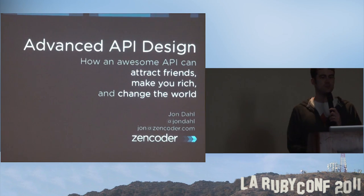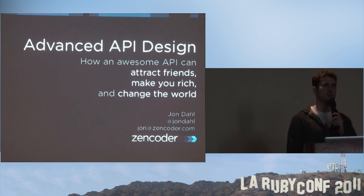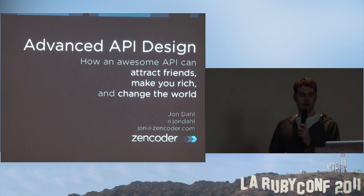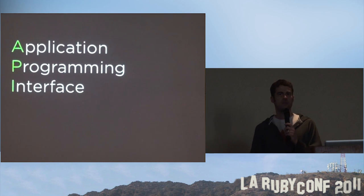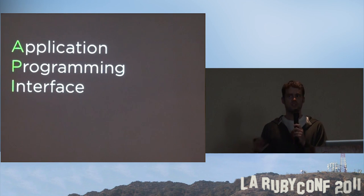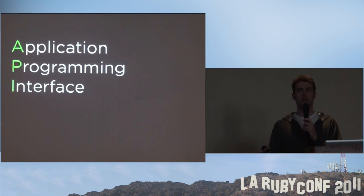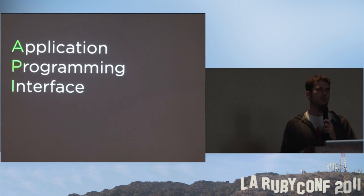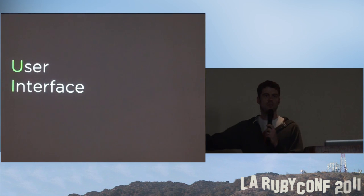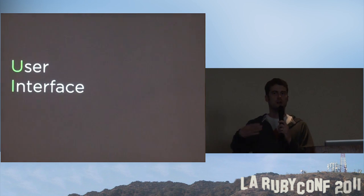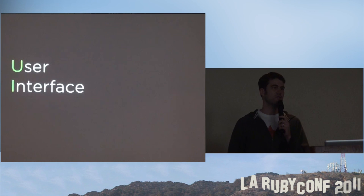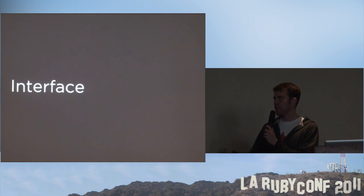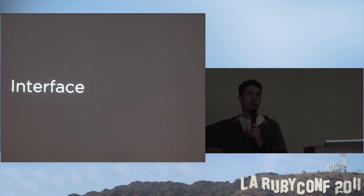Let's try to do this in two minutes. An API is an application programming interface — a way for two applications to talk to each other, two bits of software to talk to each other. Kind of like a user interface where a user talks to software, an API is a way for software to talk to software. They're both interfaces.